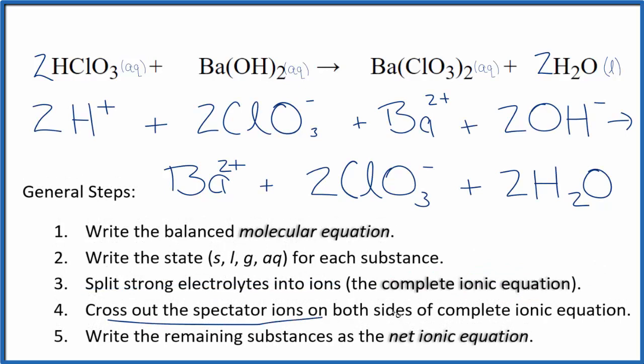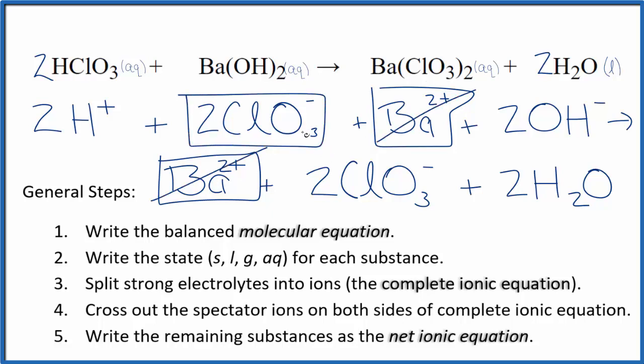Now we're going to cross out spectator ions. They're on both sides of the complete ionic equation. So in the reactants and in the products, I do have this barium ion right here, Ba2+. That's a spectator ion. We can cross that out. I also have these two chlorate ions here in the reactants and in the products. So those are spectator ions. I can cross those out.